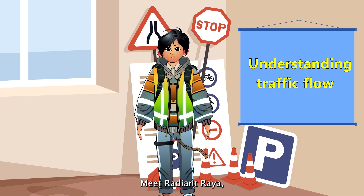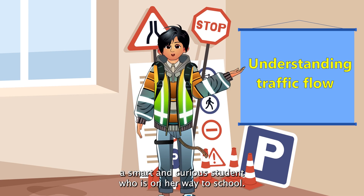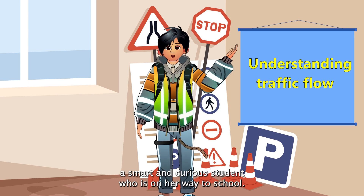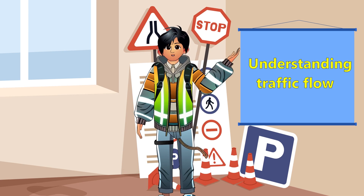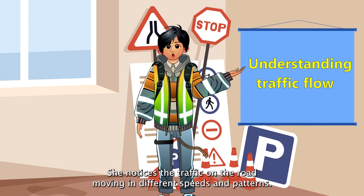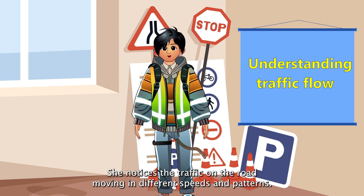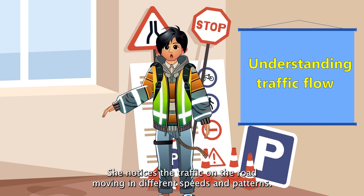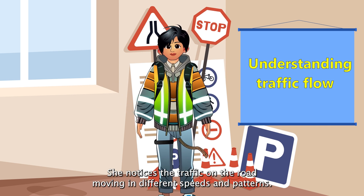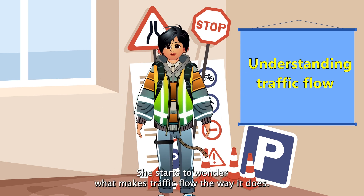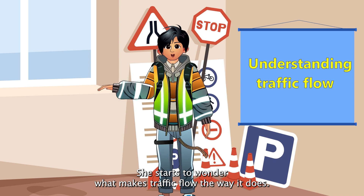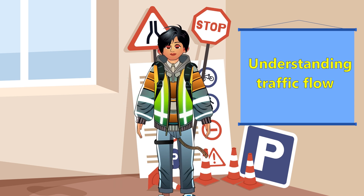Meet Radiant Rhea, a smart and curious student who is on her way to school. While walking, she notices the traffic on the road moving in different speeds and patterns. She starts to wonder, what makes traffic flow the way it does?